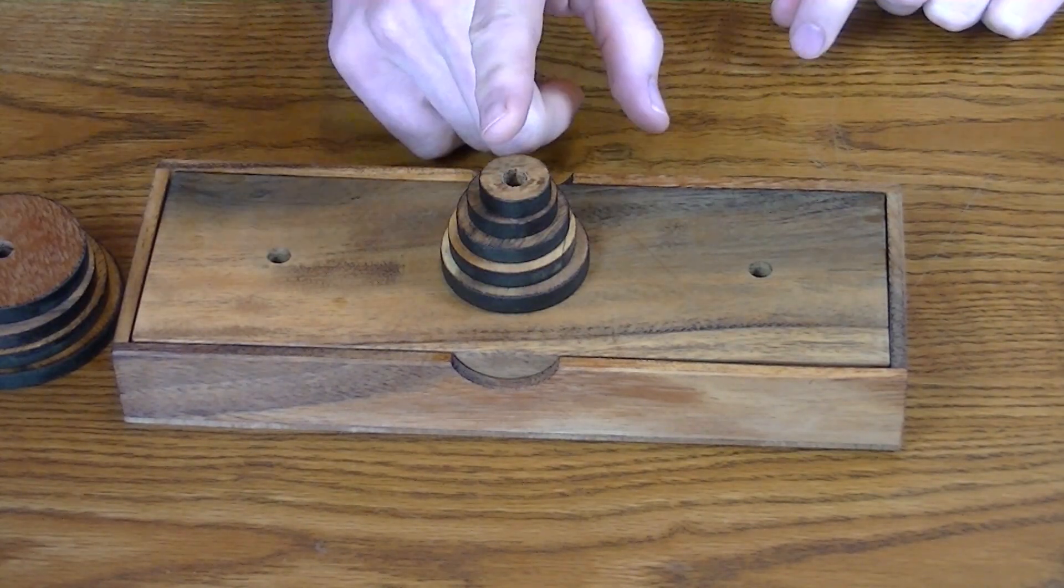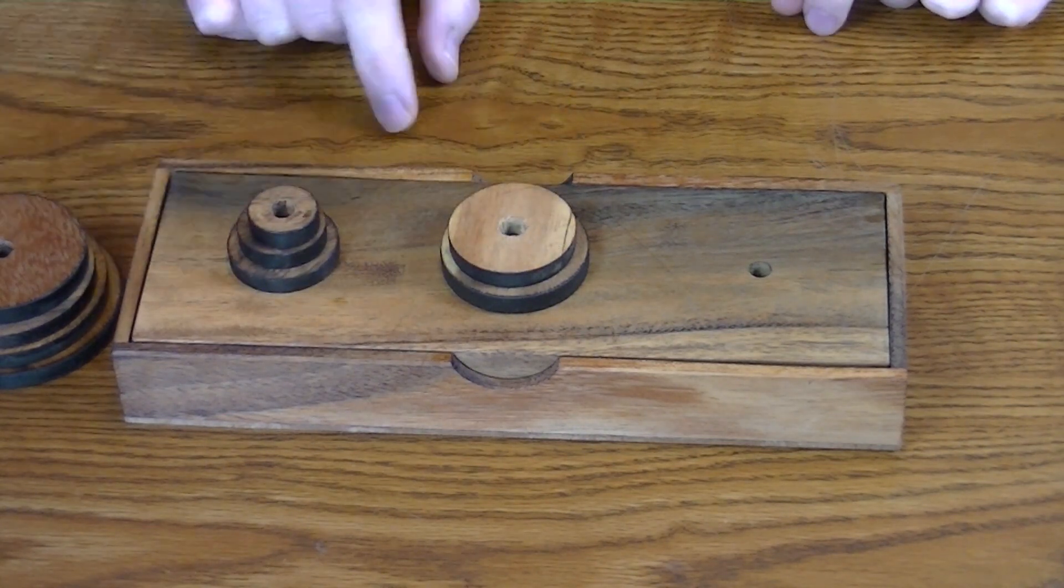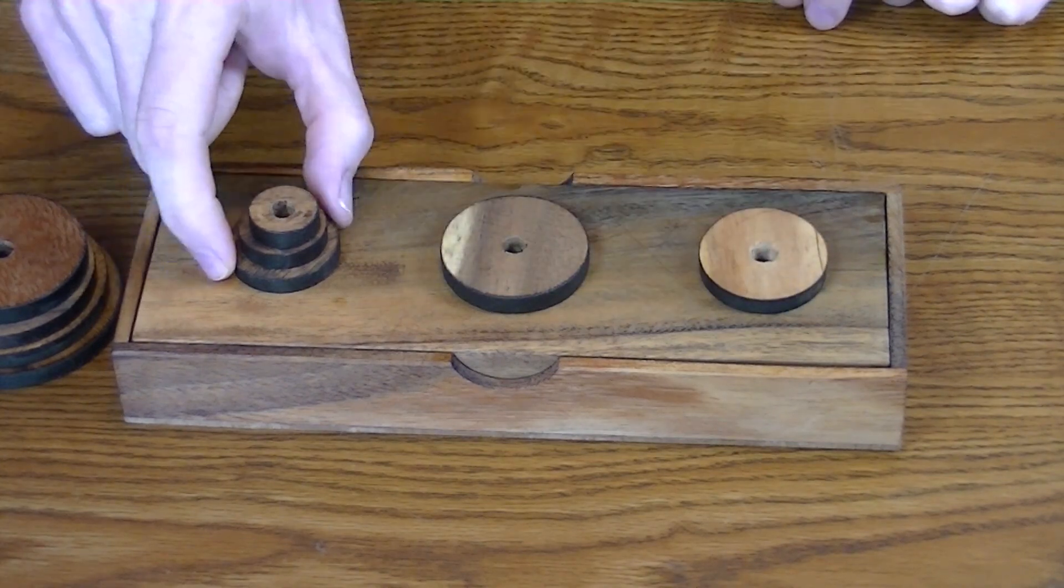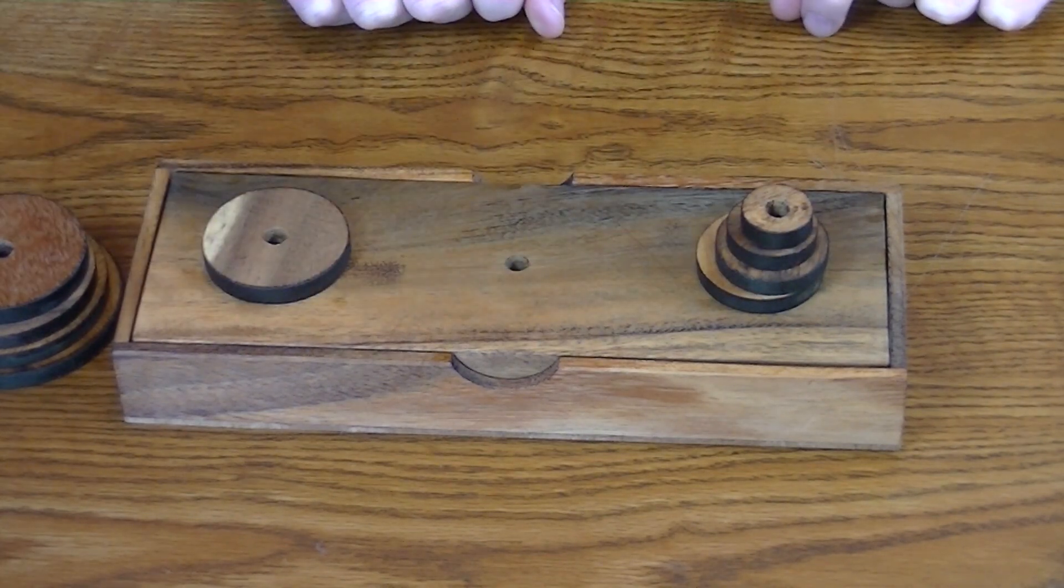To move a pile of five from the center over to this side, I would move three here, then four would go over there, then five would go over here.